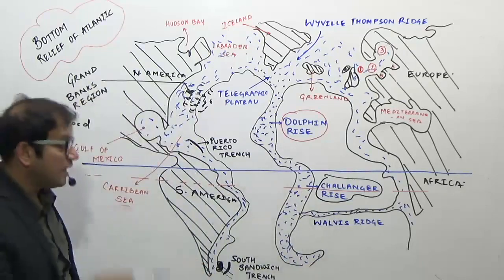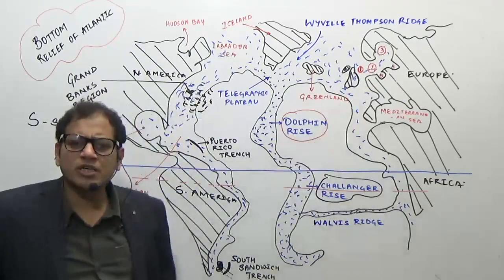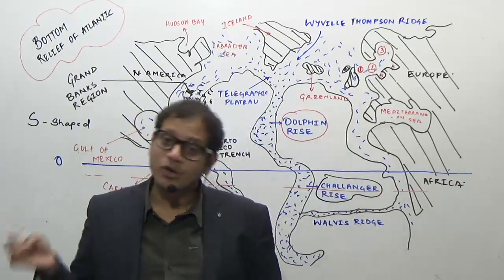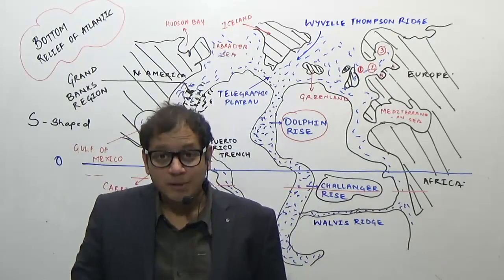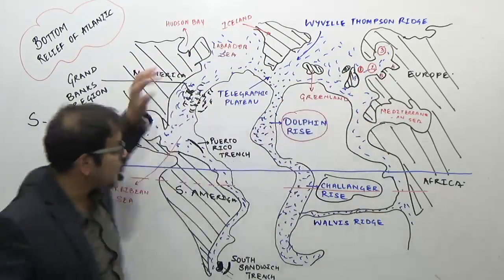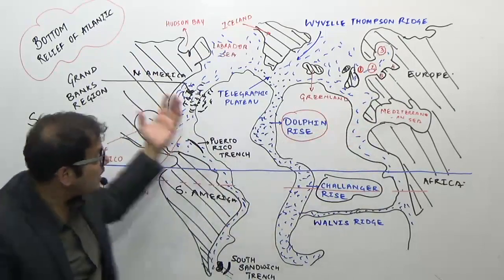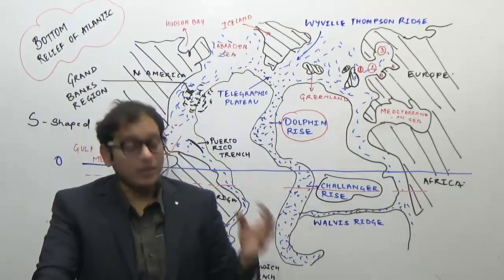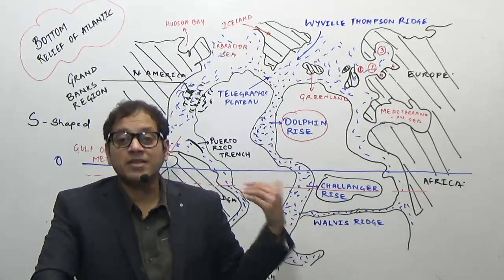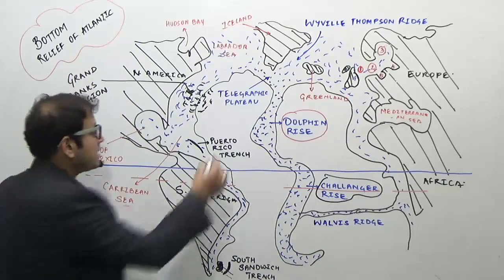Why is it called the Telegraphic Plateau? Because the initial telegraphic cables were laid from North America to Europe — the two most developed parts of the world. While laying down the telegraphic cables, explorers came to know that the ocean has different features, and therefore this was the first studied part of the ocean. Because of the spreading out of the ridge, it is known as the Telegraphic Plateau.